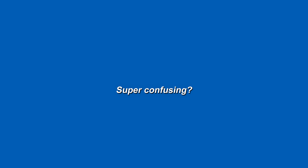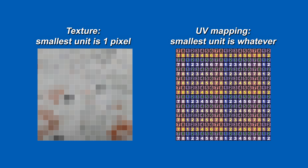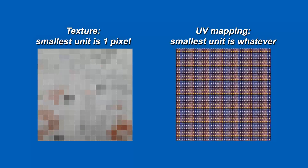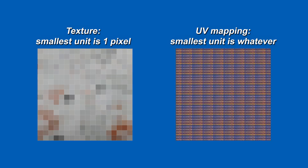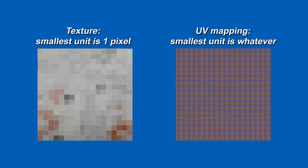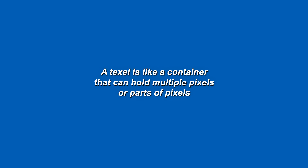Super confusing, right? The easiest way to describe this is: in a texture the smallest unit you can have is one pixel, but in UV mapping on a 3D model the smallest unit you can have is whatever you want, because you can tile the texture or scale the UV shell. So each texel can contain a different number of pixels — a texel is kind of like a virtual unit which can contain as few or as many pixels as you want.